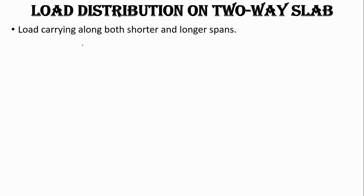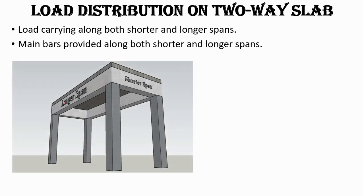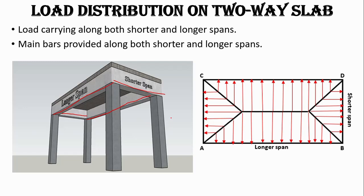In a two-way slab, all the load is carried along both the shorter and longer spans, meaning we have to provide main bars in both spans. We require beams in both directions — in the longer span and in the shorter span as well. The load is transferred in a pattern; on the longer span beam AB, the load will be trapezoidal.